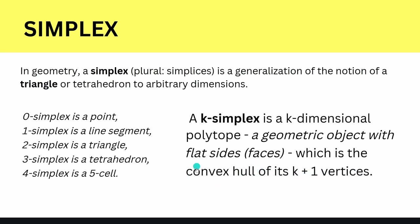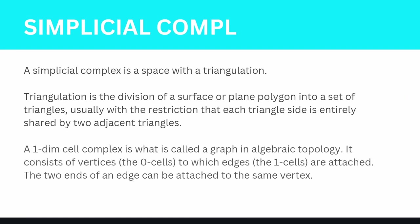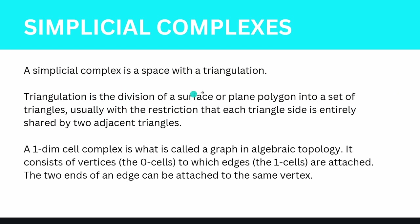The convex hull is a very strictly defined mathematical term — it means exactly what it says: it's a hull, an envelope. To construct simplicial complexes from simplices is easy, because a simplicial complex is a space with a triangulation. A triangulation is the division of a surface or plane polygon into a set of triangles, usually with the restriction that each triangle side is entirely shared by two adjacent triangles — and 'entirely shared' is the crucial wording.